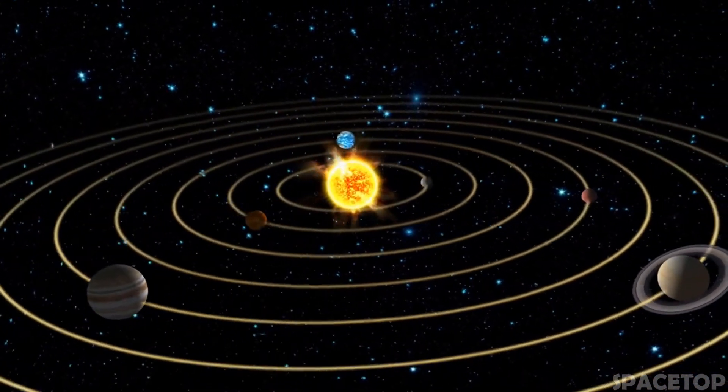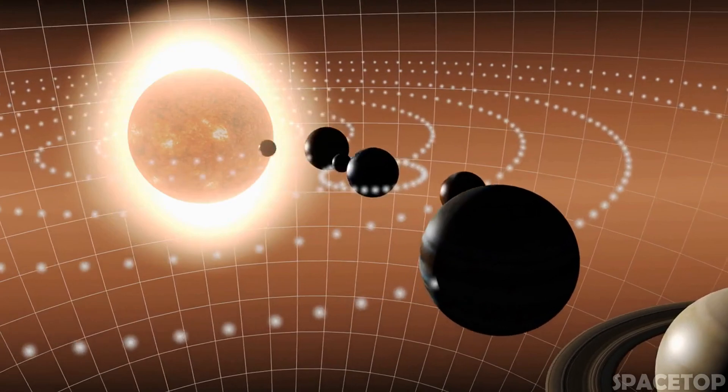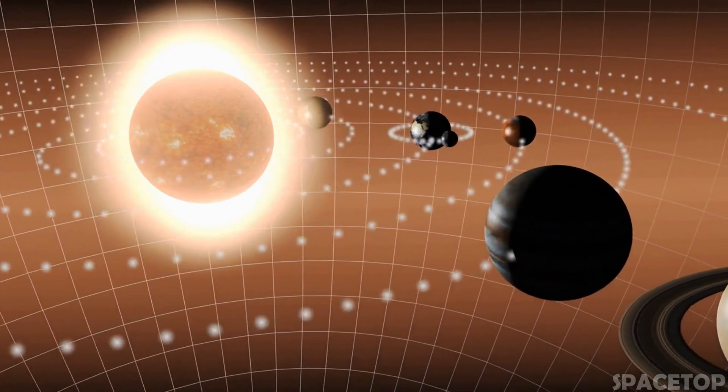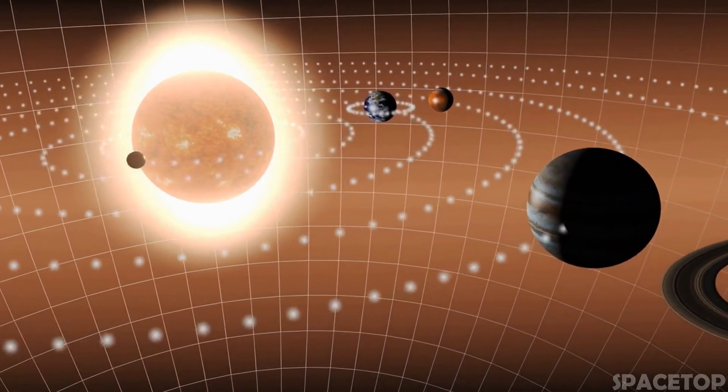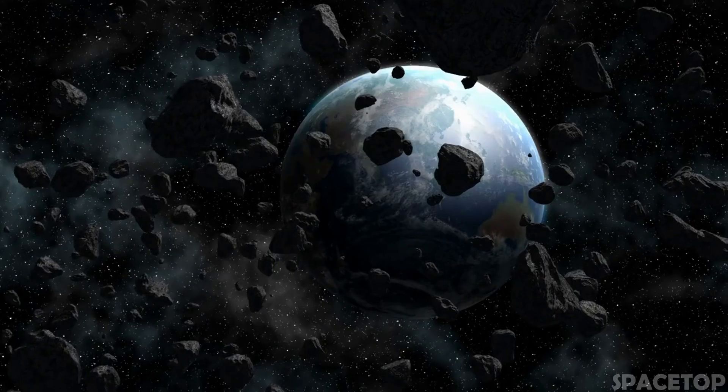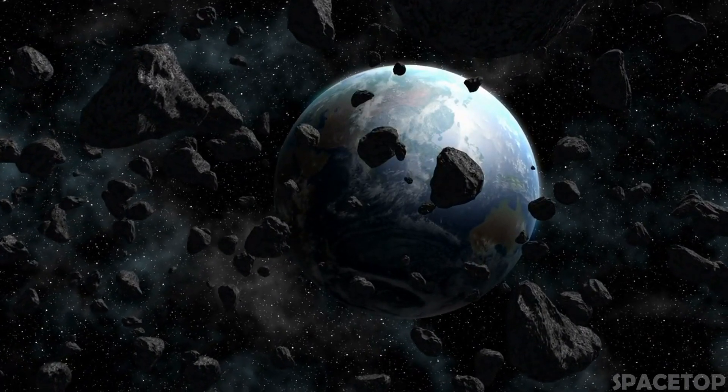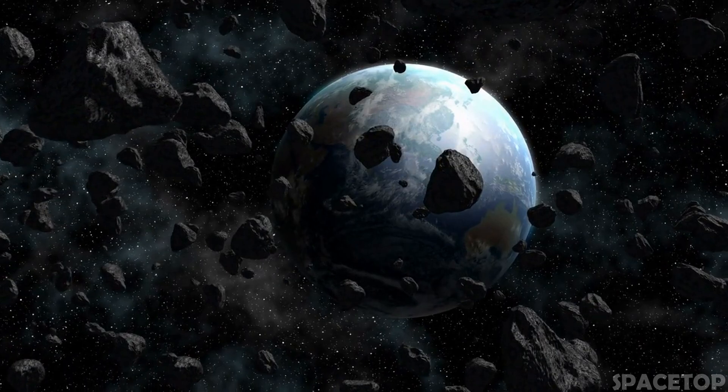It is just one of countless planetary systems scattered throughout our galaxy. As we know, it consists of a single star at the main sequence stage and eight planets with their satellites. In addition, our system contains more than a million small celestial bodies, such as asteroids, comets, and meteoroids.